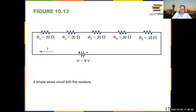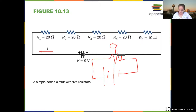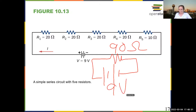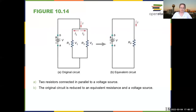This is a simple series circuit with five resistors. Four of them have 20 ohms and one of them has 10 ohms, so the sum of those resistances is 90 ohms. I can draw the equivalent circuit as a 90 ohm resistor and a 9 volt battery, and then use Ohm's law to calculate what the current through the circuit is.